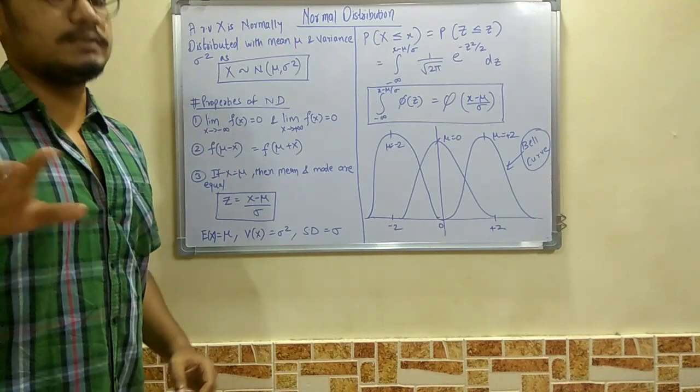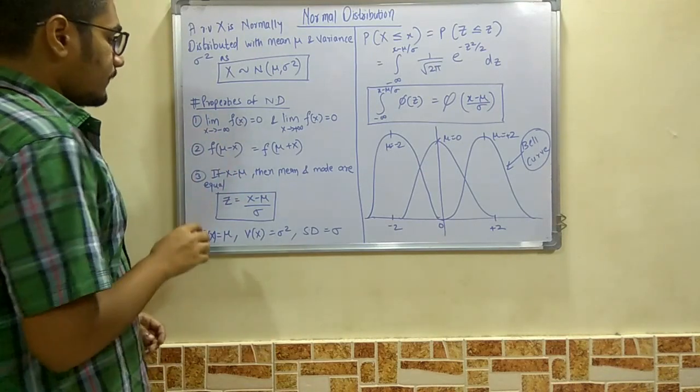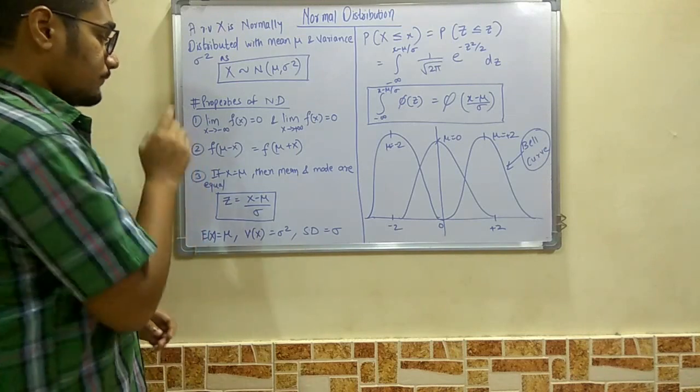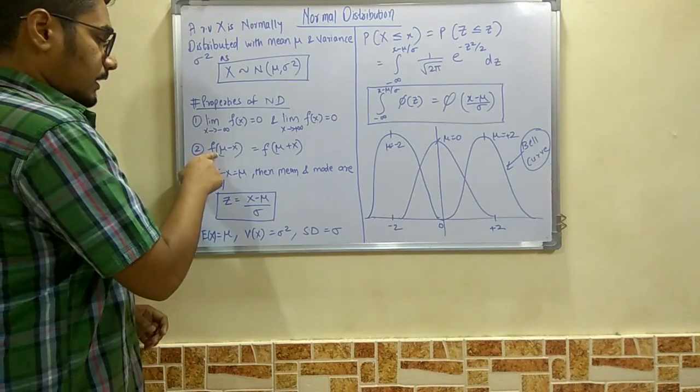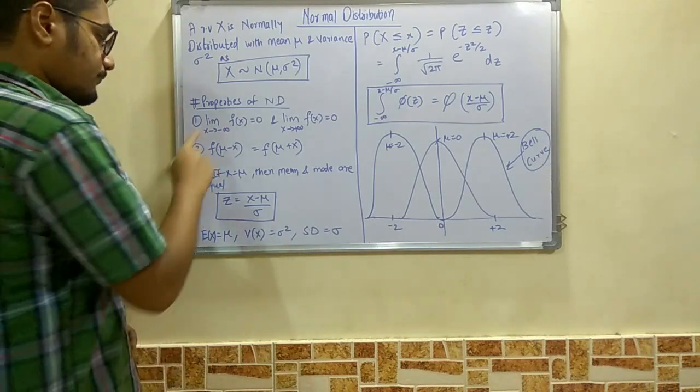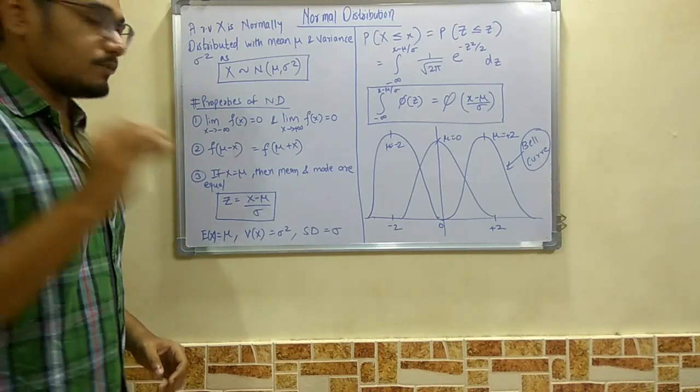Next we have the second property: if the function, that is the mean, is deducted from X, the probability you're going to find is equal to the function of μ plus X.